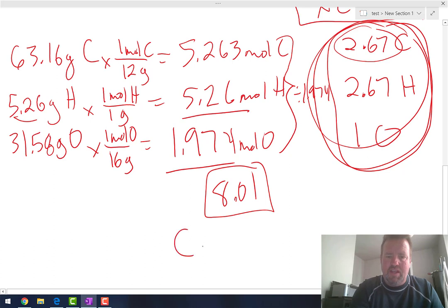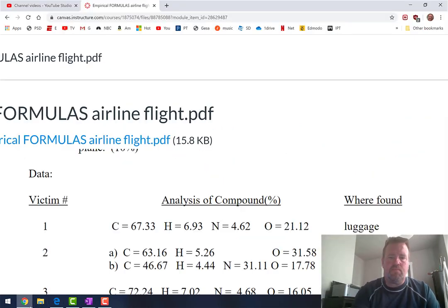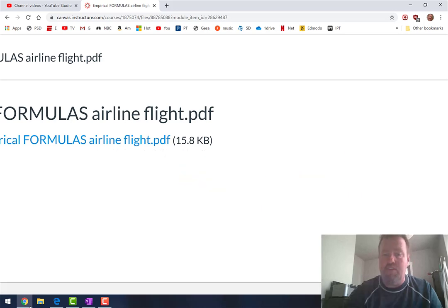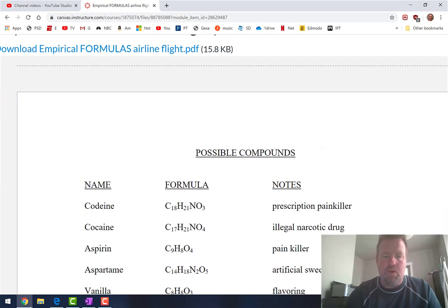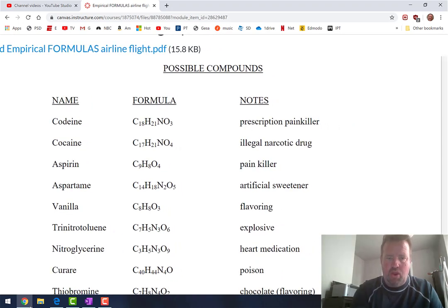So that's what we're going to do is we're going to multiply all of these numbers by 3. And what that does is it's going to give us a formula of C8, H8, O3. And now we're going to go back to our formulas here. If you've done this correctly, every single one of the ones that you find will be on this list. And there it is, C8, H8, O3 is vanilla flavoring.